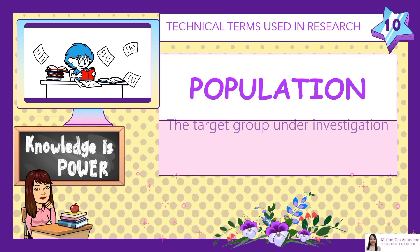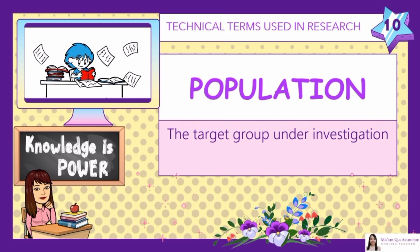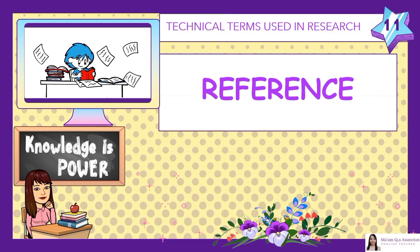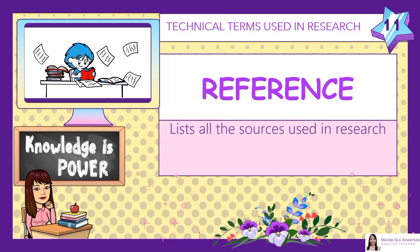Number 10: Population. The target group under investigation. It is generally a large collection of individuals or objects that is the main focus of a scientific query. Number 11: Reference. Lists all the sources used in research. The reference list provides information for readers who may want to access the sources you cite in your paper.